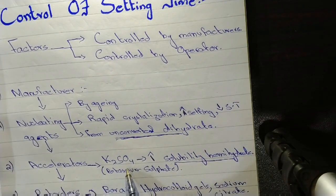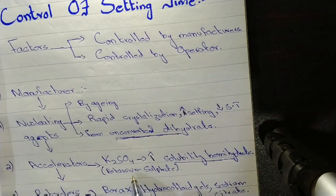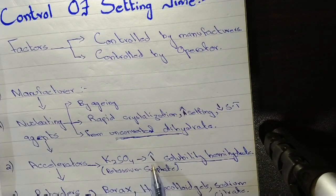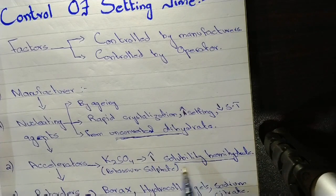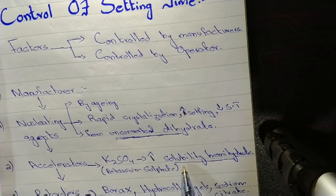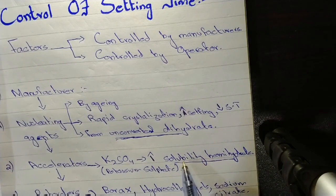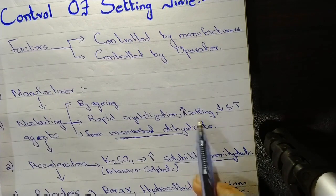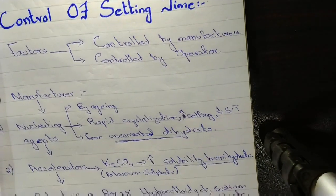The most commonly used accelerator in gypsum products is potassium sulphate. It is a frequently asked question in the MCQs. How it acts is it increases the solubility of hemihydrate crystals. Through increasing the solubility of hemihydrate crystals, the hemihydrate crystals dissolve readily in the solution. As a result, setting accelerates and setting time decreases.